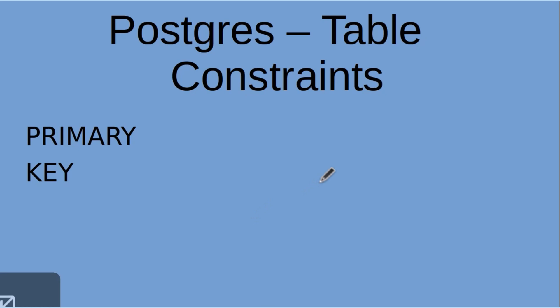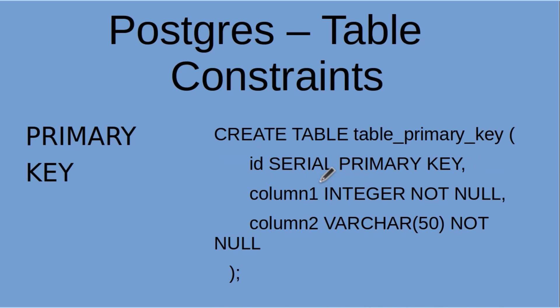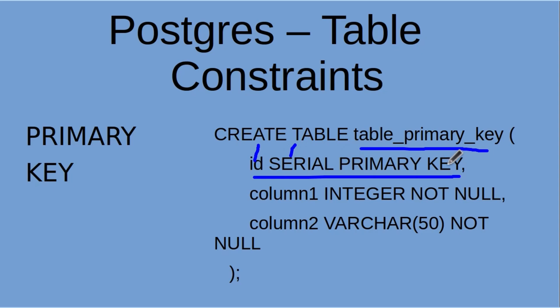The next one is the PRIMARY KEY constraint. The PRIMARY KEY constraint enforces uniqueness on a column or a combination of columns and ensures that they cannot contain null values. Here we have a table named 'table_primary_key'. Our primary key column is called ID, it is a data type of SERIAL, and it's going to make sure that it's unique and won't repeat itself anywhere in the table.